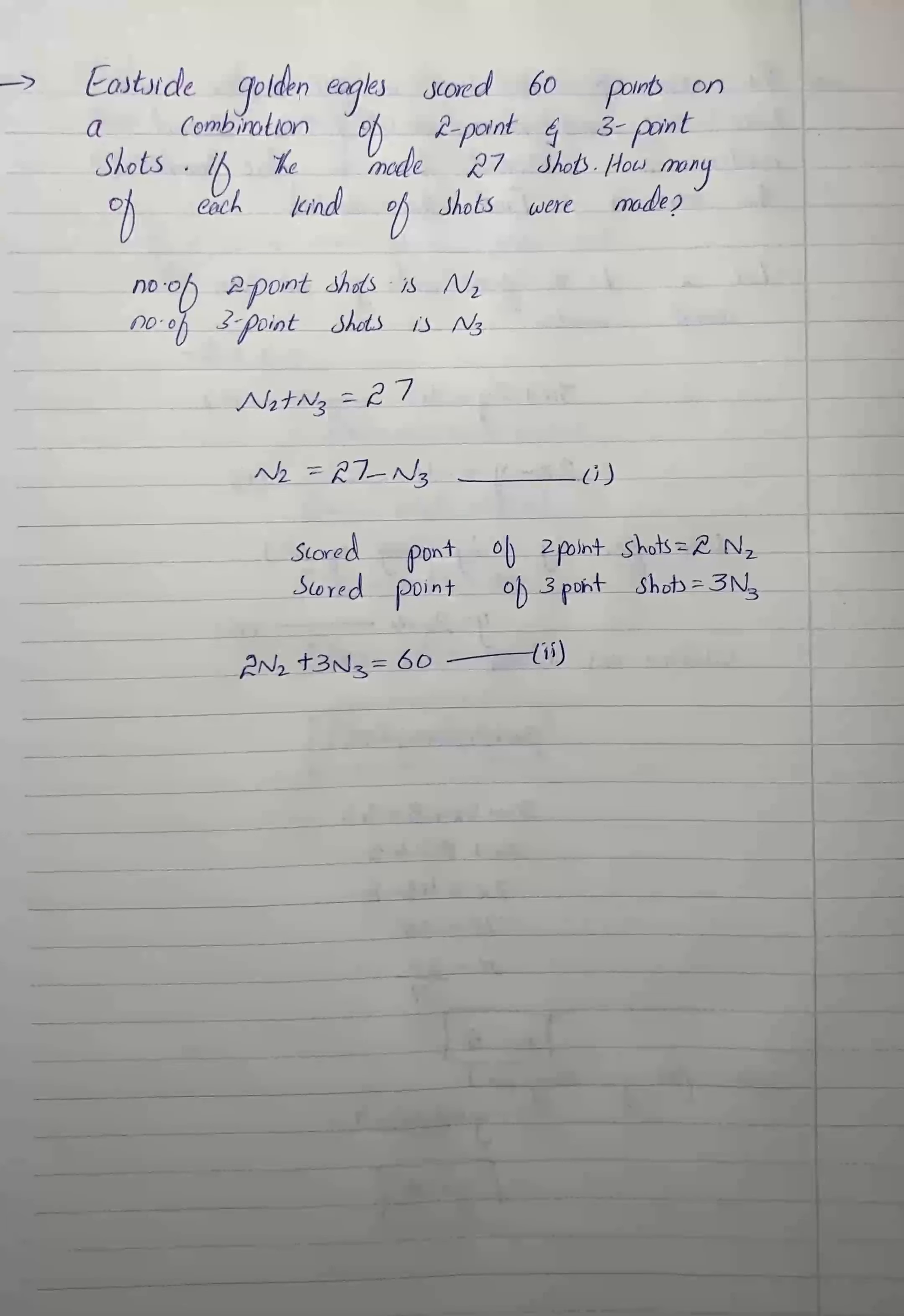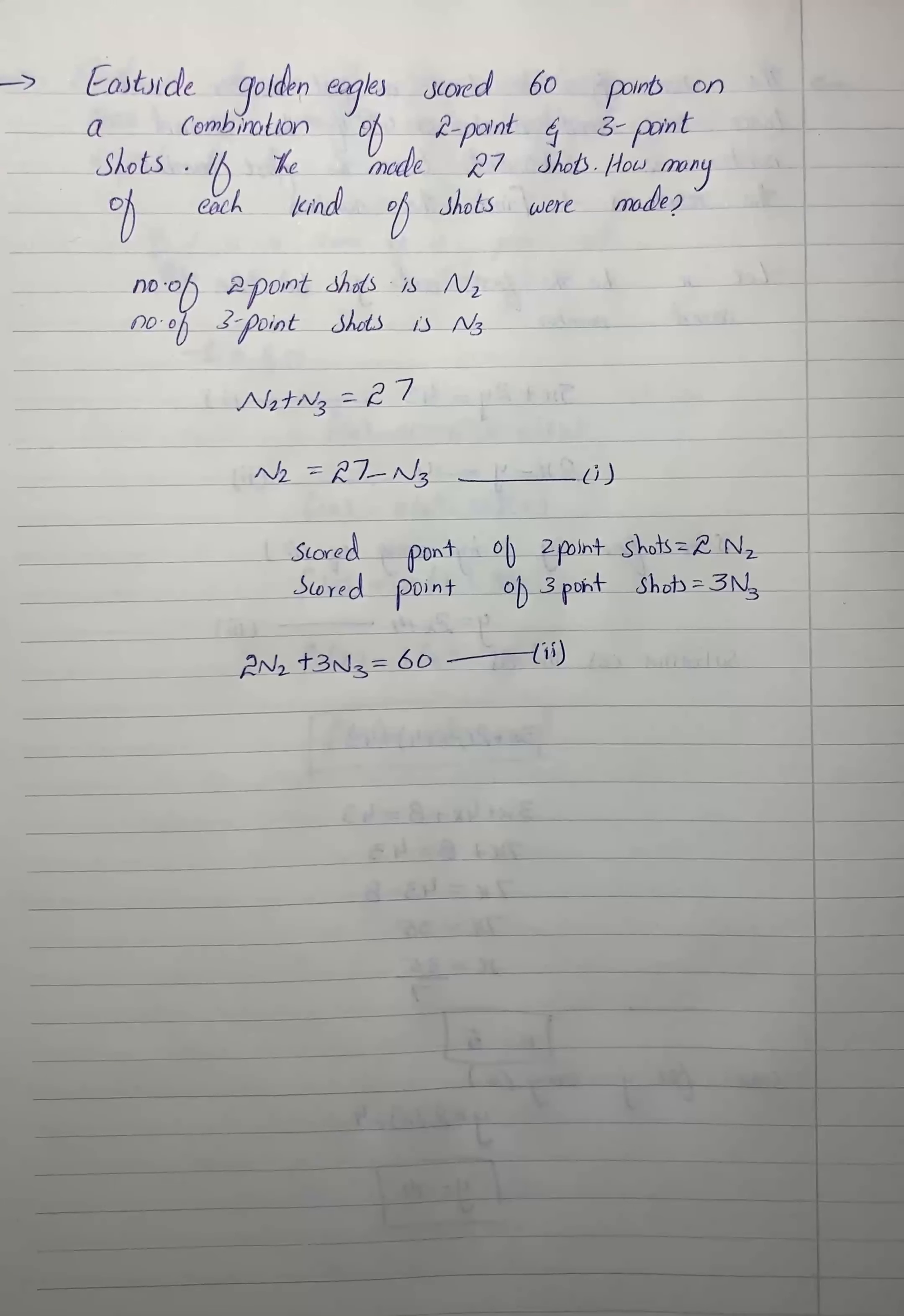This was the number of points that they made by shots of 2 points and 3 points. Now we will substitute n2 equals 27 minus n3, that is equation number 1.